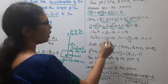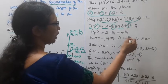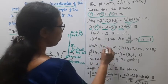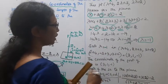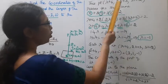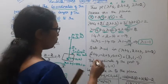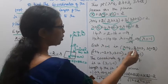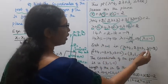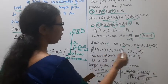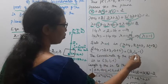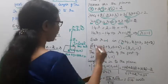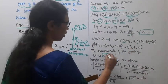14λ = -14, so λ = -14/14 = -1. Substituting λ = -1 back: x = (-1) + 4 = 3, y = 2(-1) + 3 = 1, z = 3(-1) + 2 = -1. Therefore, the coordinates of the foot of the perpendicular Q are (3, 1, -1).